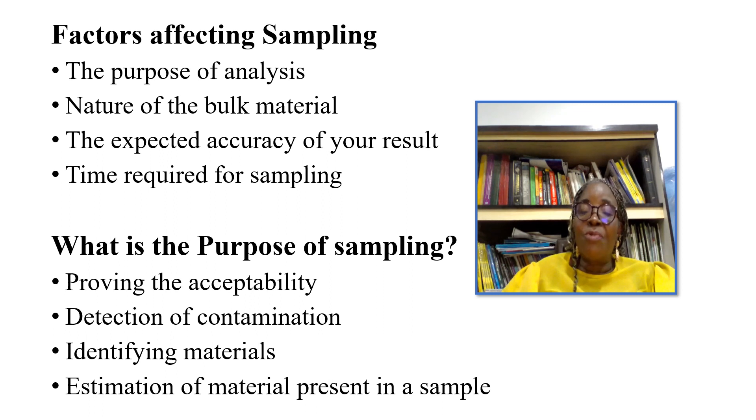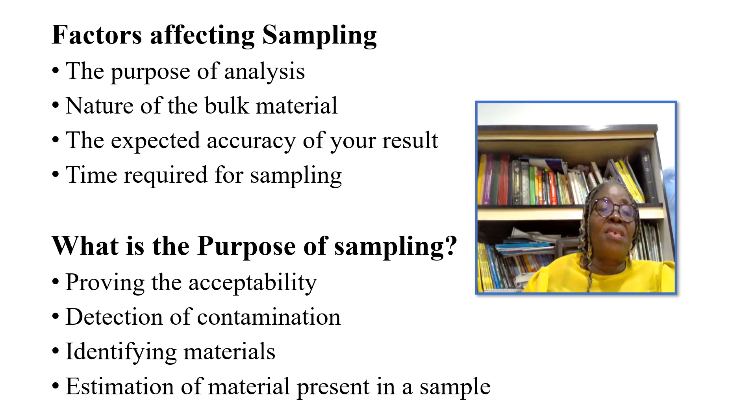The nature of the bulk material will also determine how you will sample. If it's a liquid, if it's a solid, if it's a gas, or if it's a homogeneous material or a heterogeneous material. And then your expected accuracy of your result will also determine the factor, especially sampling of drugs requires high accuracy, and then the time required for sampling. All these things you must know. What are the purposes of sampling? You want to provide the acceptability of that material you are sampling. You want to detect the contamination of that sample and you identify the material and estimate the material present in your sample.